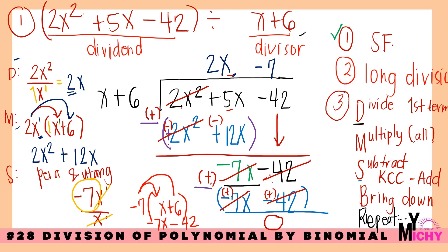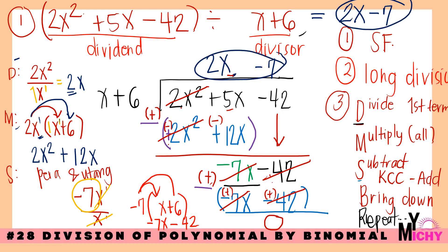The remainder is zero, so the final answer to 2x squared plus 5x minus 42 divided by x plus 6 is 2x minus 7.